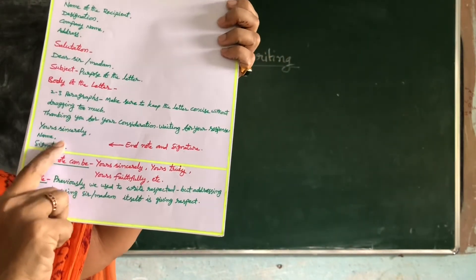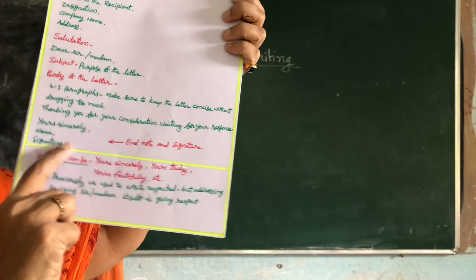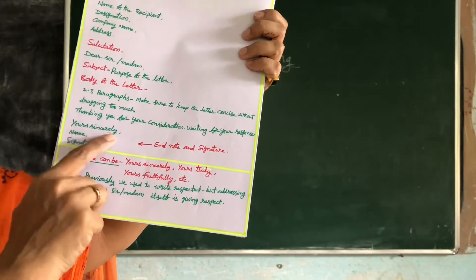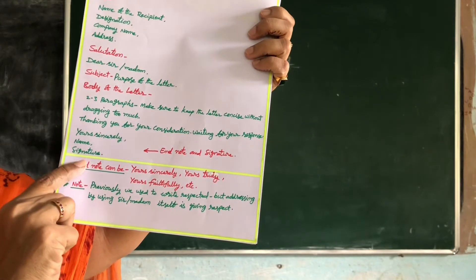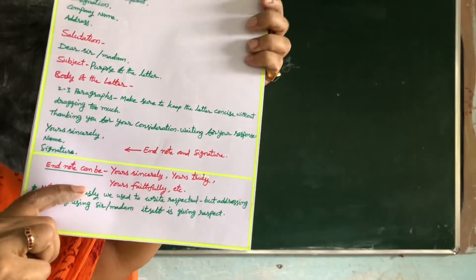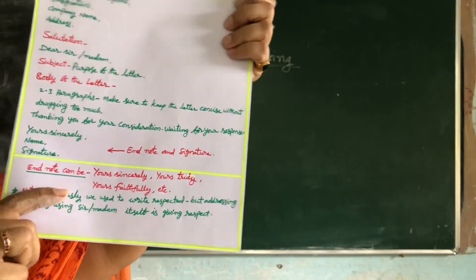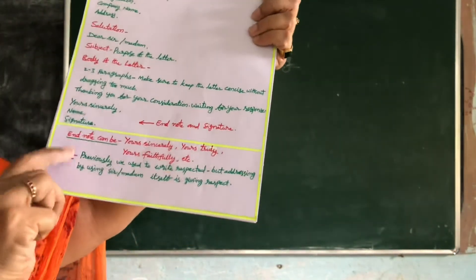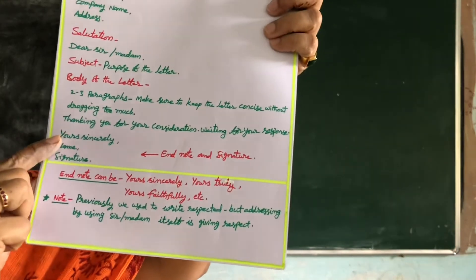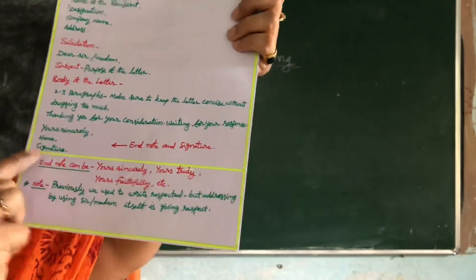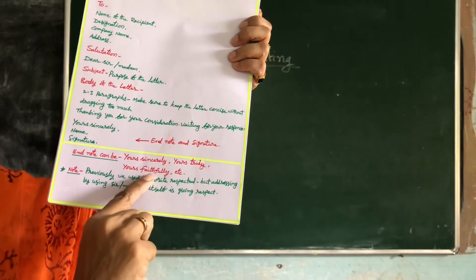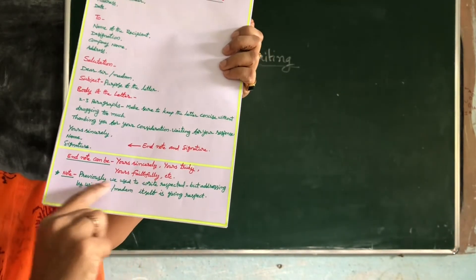Then comes the closing of the letter, also called the closing note or end note. In the end note, you write 'Yours sincerely,' followed by your name and signature. There is no compulsion to use only 'yours sincerely' — you can also use 'yours truly' or 'yours faithfully.'